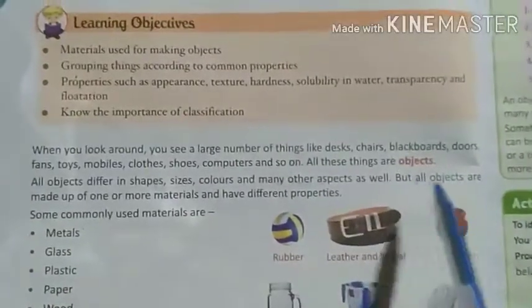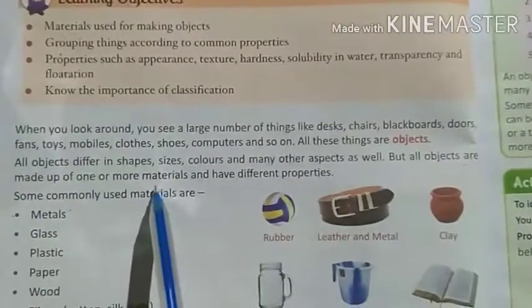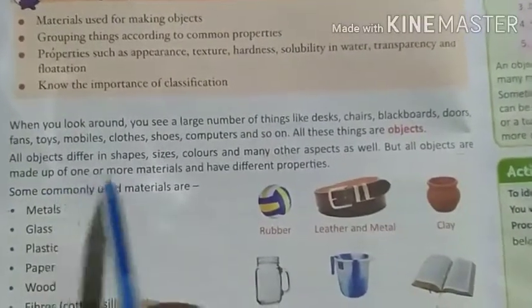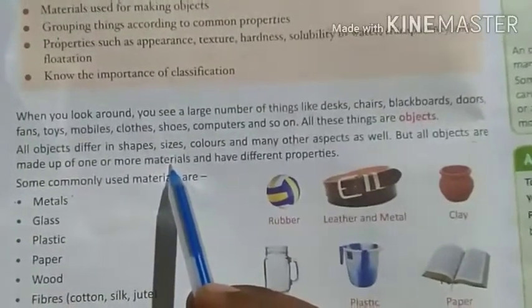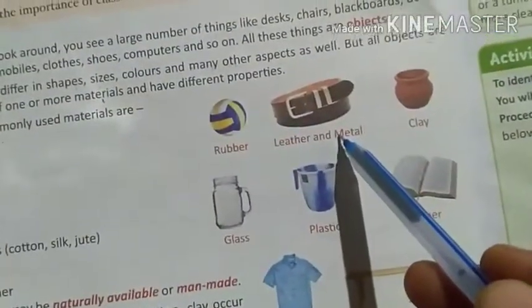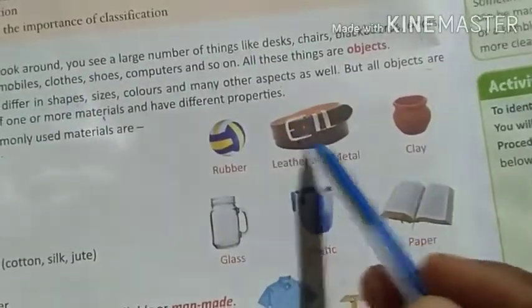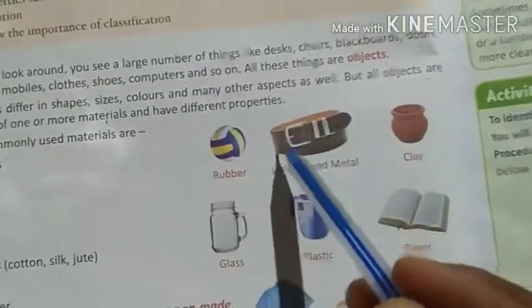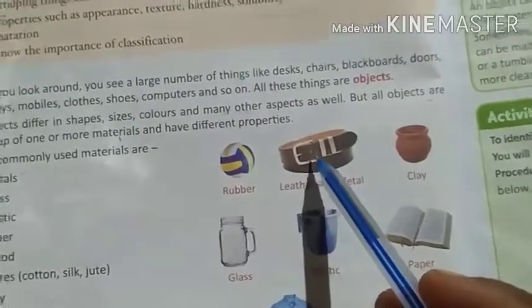All objects are made up of one or more materials. For example, a picture frame can be made up of two materials.